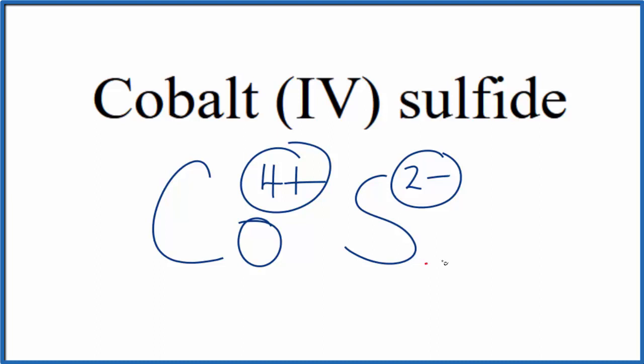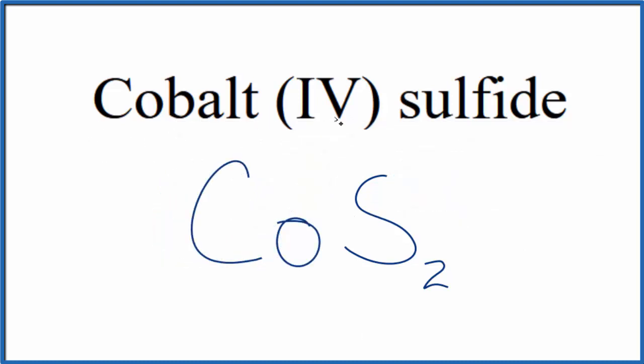If we had two of these sulfide ions here, 2 times 2- would give us 4-. 4- and 4+, that adds up to zero, gives us a net charge of zero. So this is the formula for cobalt (IV) sulfide, CoS2.